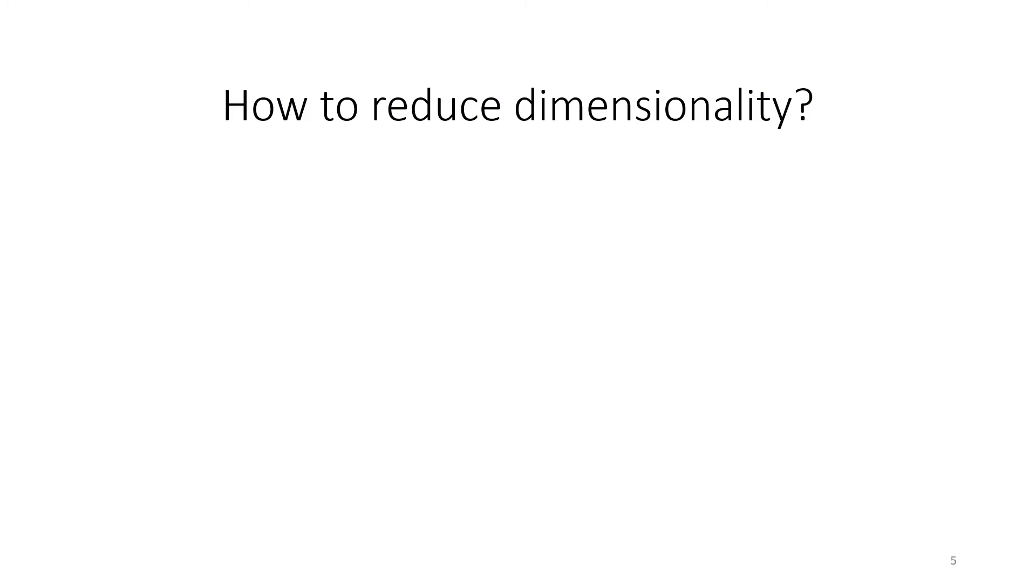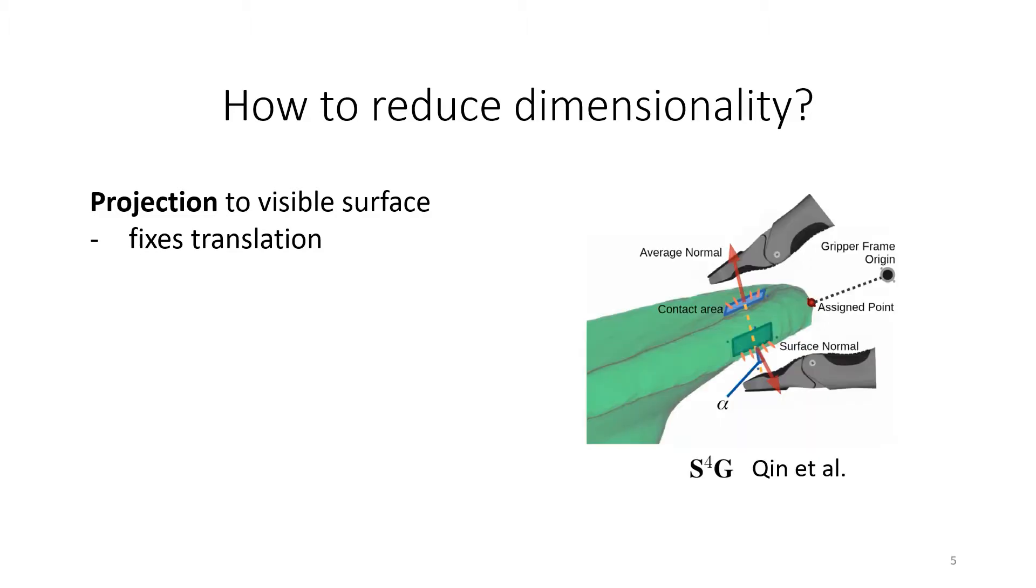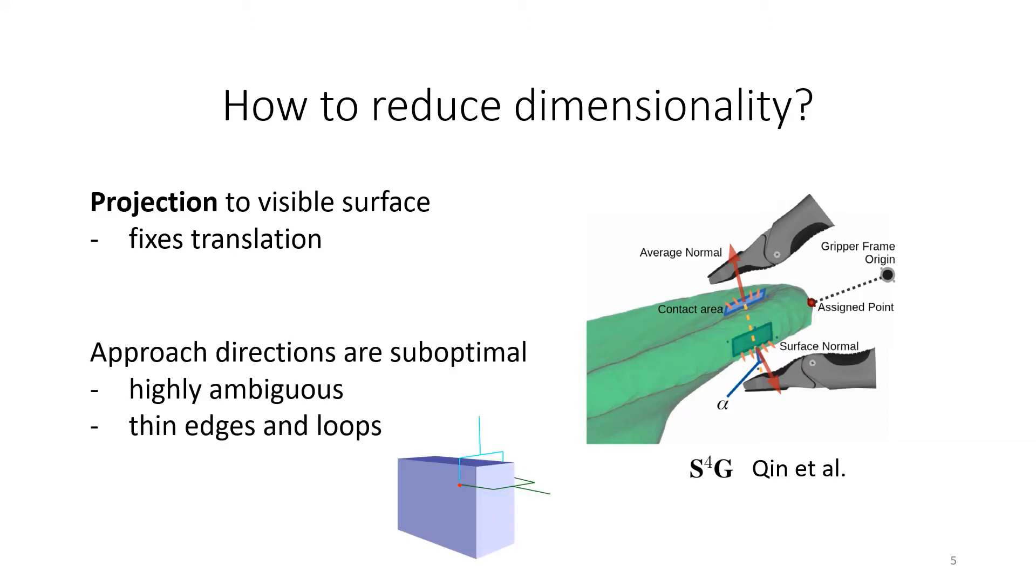If the main issue is the high dimensionality, how can we reduce it? We could project the grasp approach directions to the visible surface to fix translations and thus reduce dimensionality. This was recently done in a method called S4G. However, approach directions are suboptimal because they are highly ambiguous. In the example below, you can see very similar grasps with quite ambiguous approach directions. Also, you can't project grasp approach directions to thin edges or through loops.